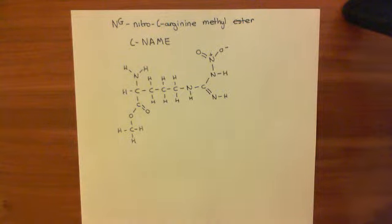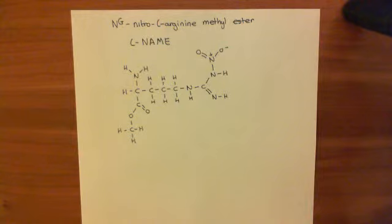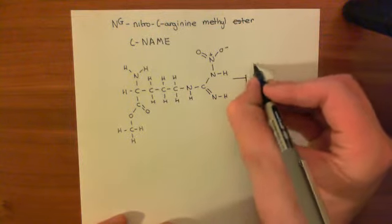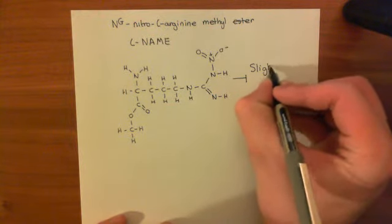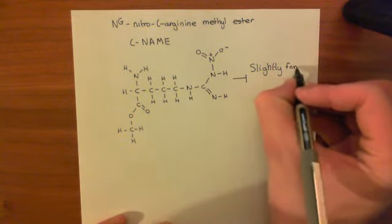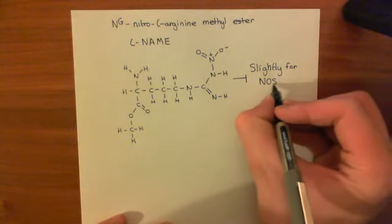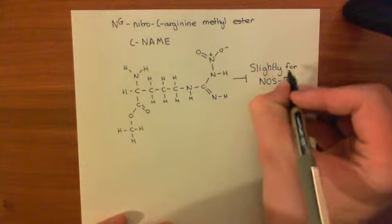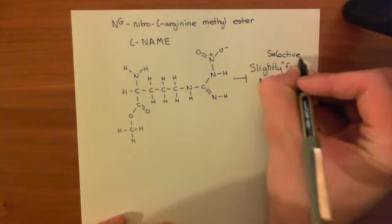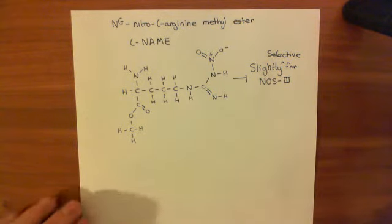L-NAME, like L-NMMA and L-nitro-arginine, is not very selective between the different isoforms of the NOS enzyme. However, it is slightly selective for NOS-3 over the other two isoforms, but it will inhibit all three. So it's slightly selective for NOS-3.